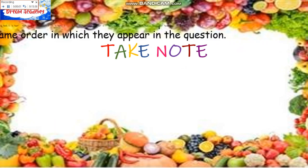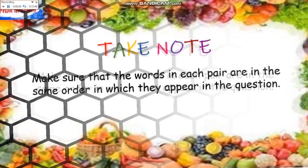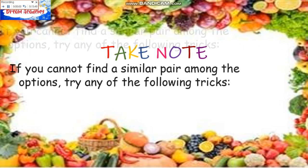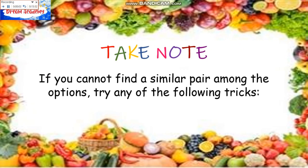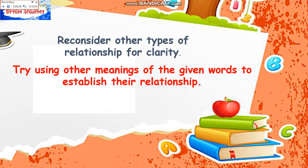Make sure that the words in each pair are in the same order. Do not change the order in which they appear in the question. If you cannot find a similar pair among the options, try other tricks — consider other types of relationships for clarity, and try using other meanings of the given words to establish their relationship.